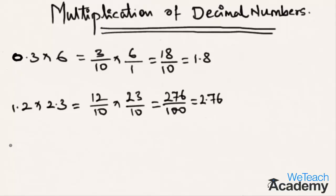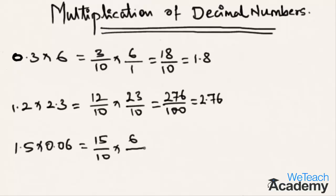Let us consider one more example. Let us multiply 1.5 with 0.06. So 1.5 is nothing but 15 by 10, and 0.06 is nothing but 6 by 100. Now 15 times 6 is 90, and 10 times 100 is 1000. As the denominator has three zeros, the result is 90 by 1000.